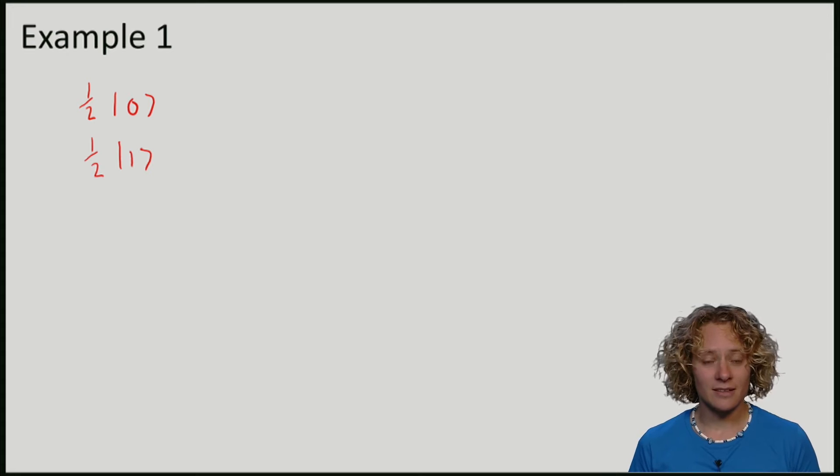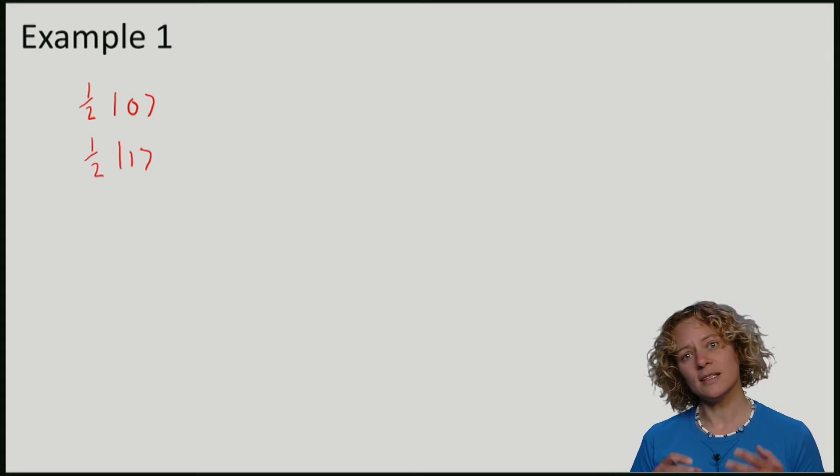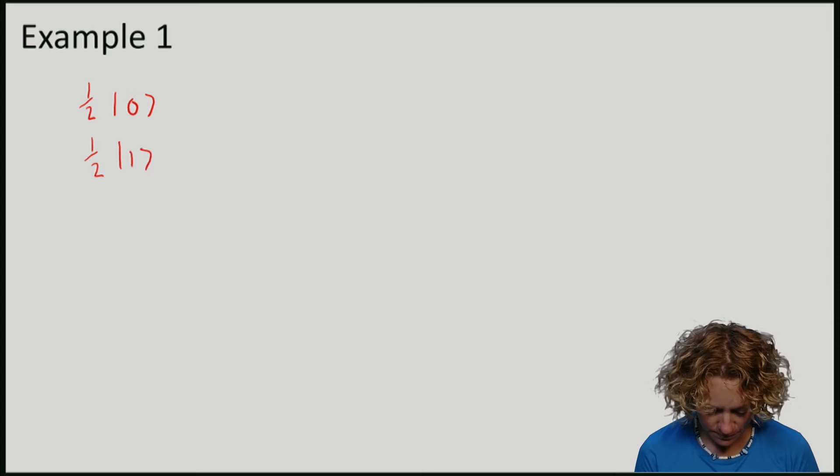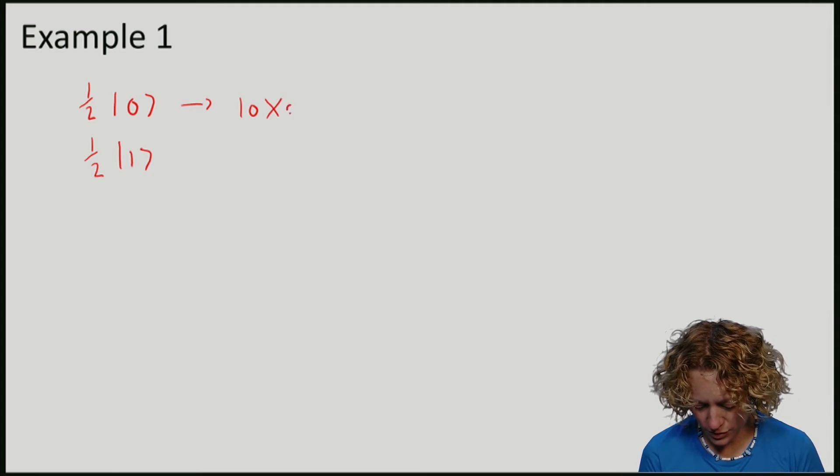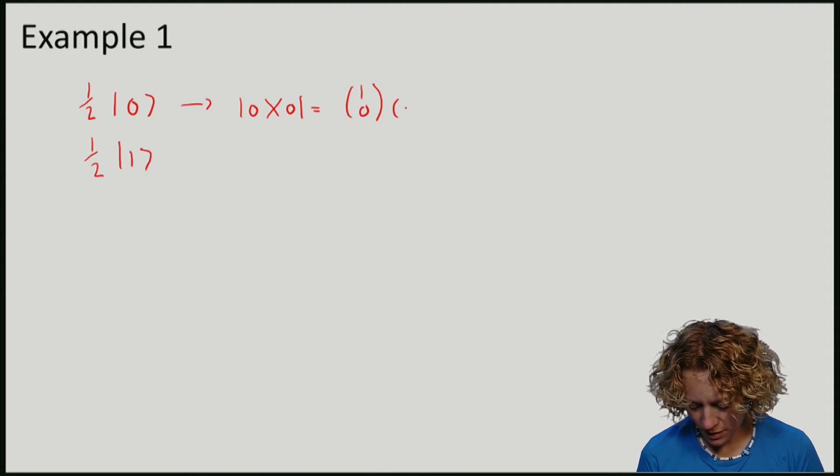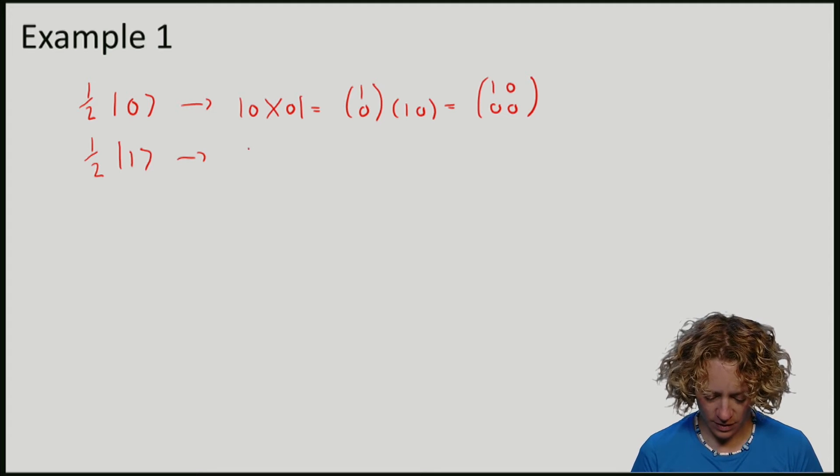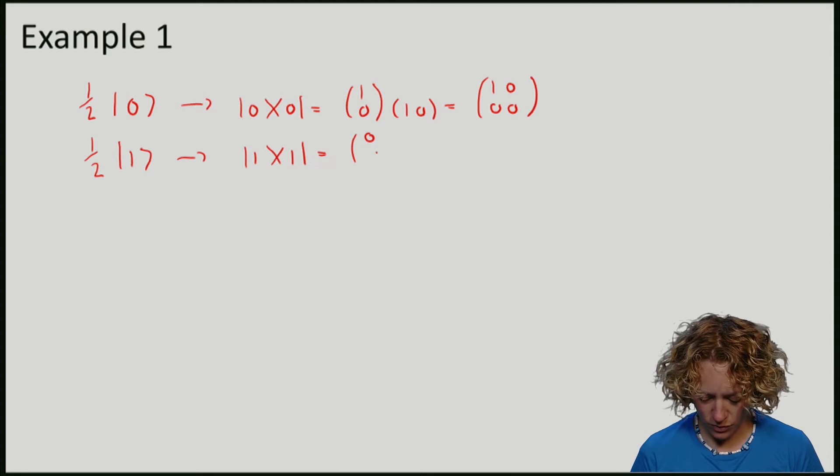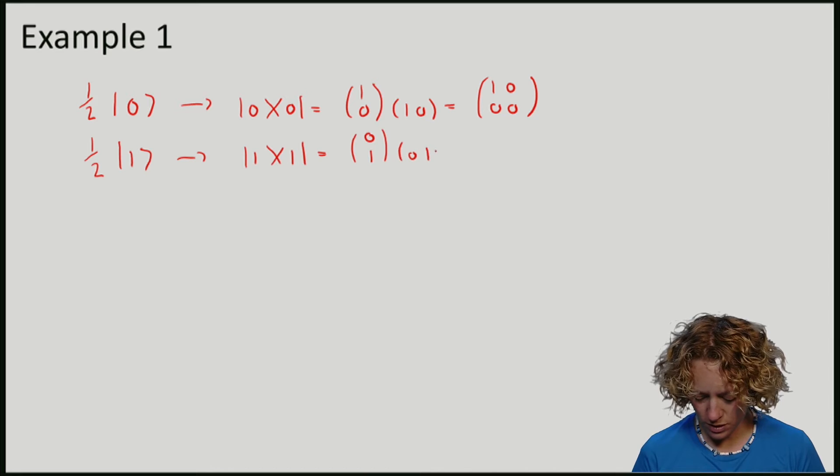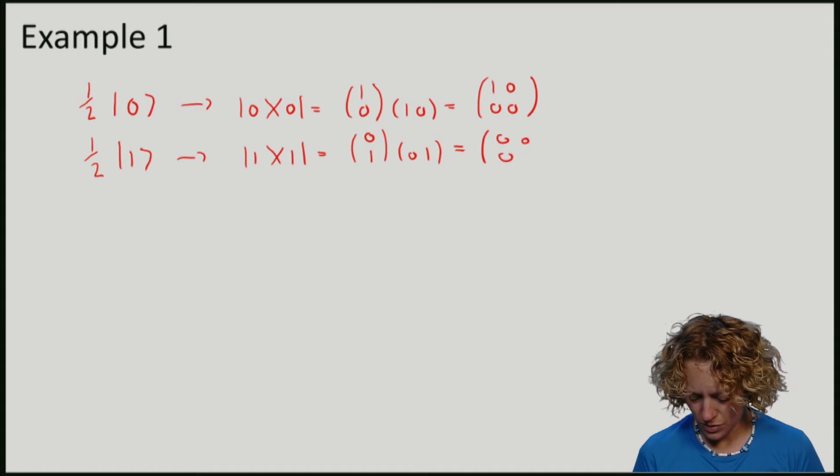Again we first take the state 0 and 1 and individually turn them into density matrices. So from |0⟩ I'll get |0⟩⟨0| which gives me (1, 0, 0, 0), and from |1⟩ I'll get |1⟩⟨1| which gives me a matrix (0, 0, 0, 1).